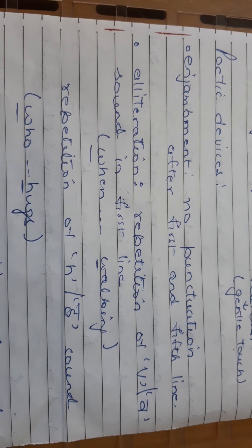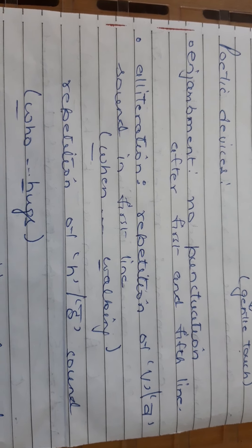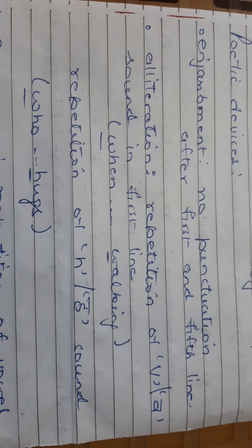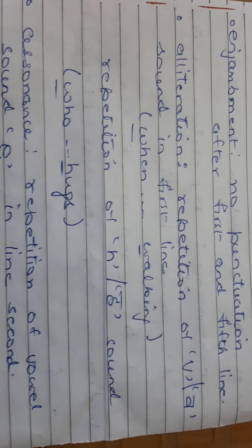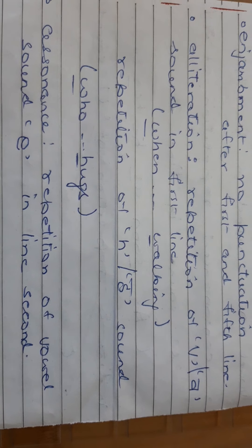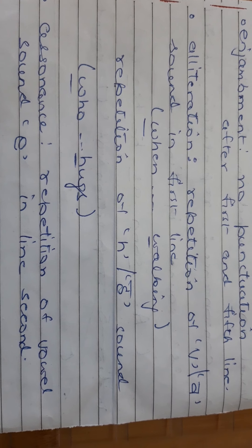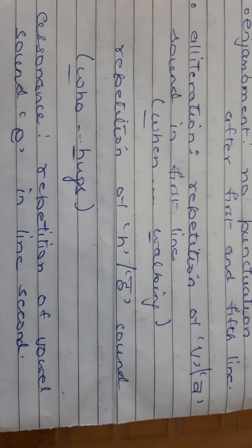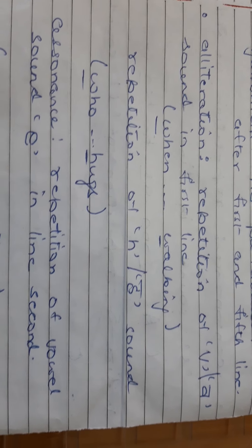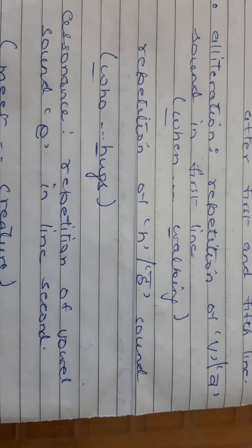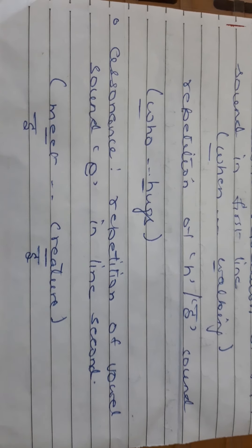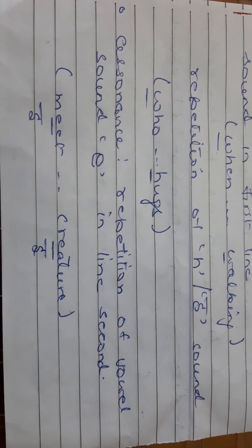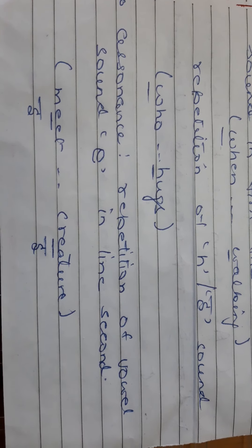The poetic devices used here are: Enjambment — no punctuation after the 4th and 5th lines; Alliteration — repetition of the 'v' sound in the first line and repetition of the 'h' sound; and Assonance — repetition of the vowel sound 'e' in the 2nd line.